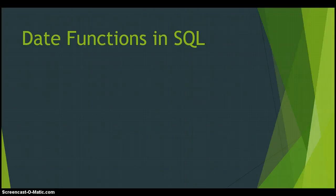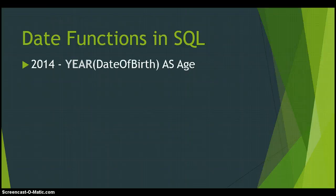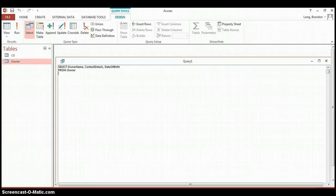There are also functions you can use to extract data from a date. The first is the YEAR() function — you pass a date-formatted field and it extracts just the year as a number. In this example, we take the current year 2014 and subtract the YEAR of the date of birth, setting that as a calculated field called 'age'. This is a good example of why you don't need to store age in the database — you can calculate it.